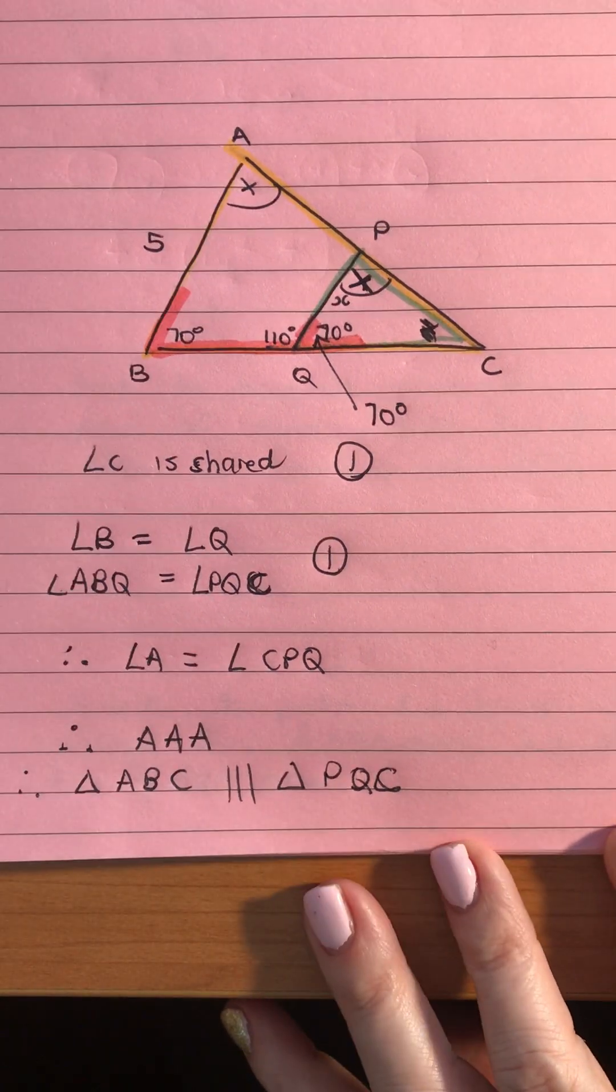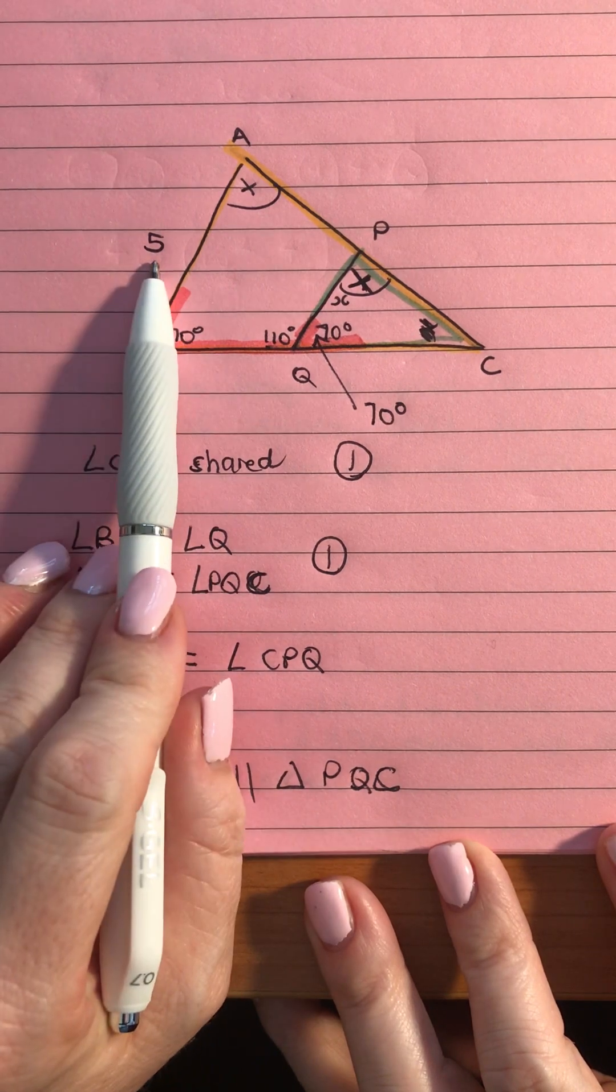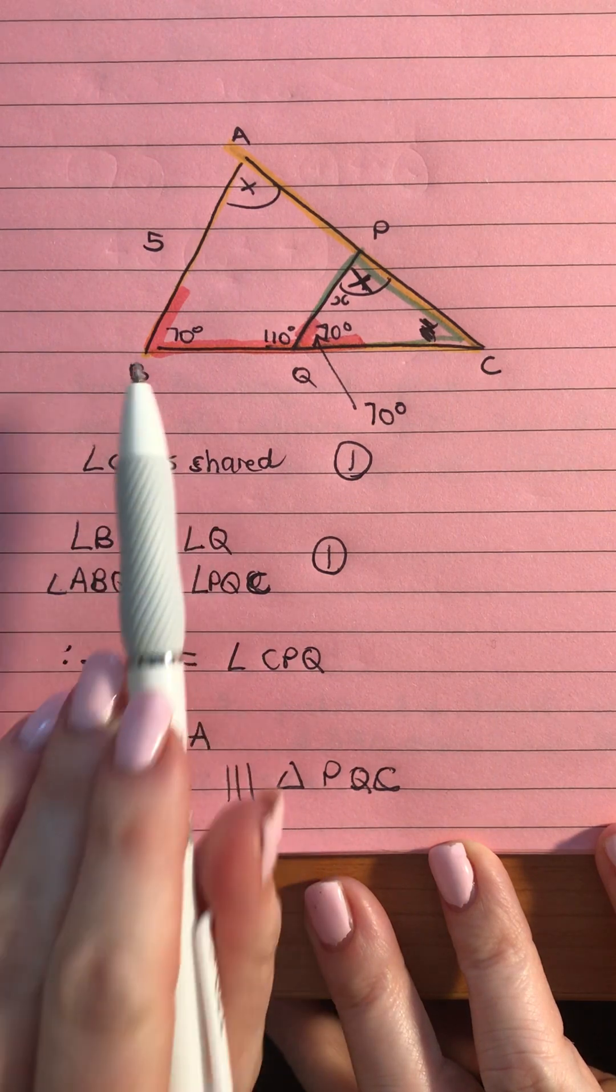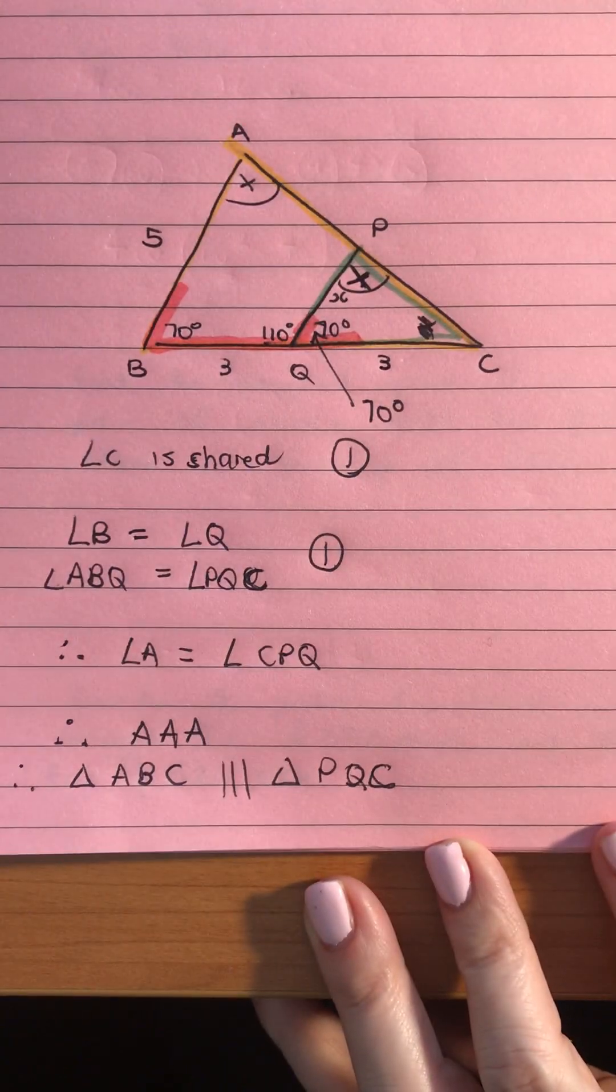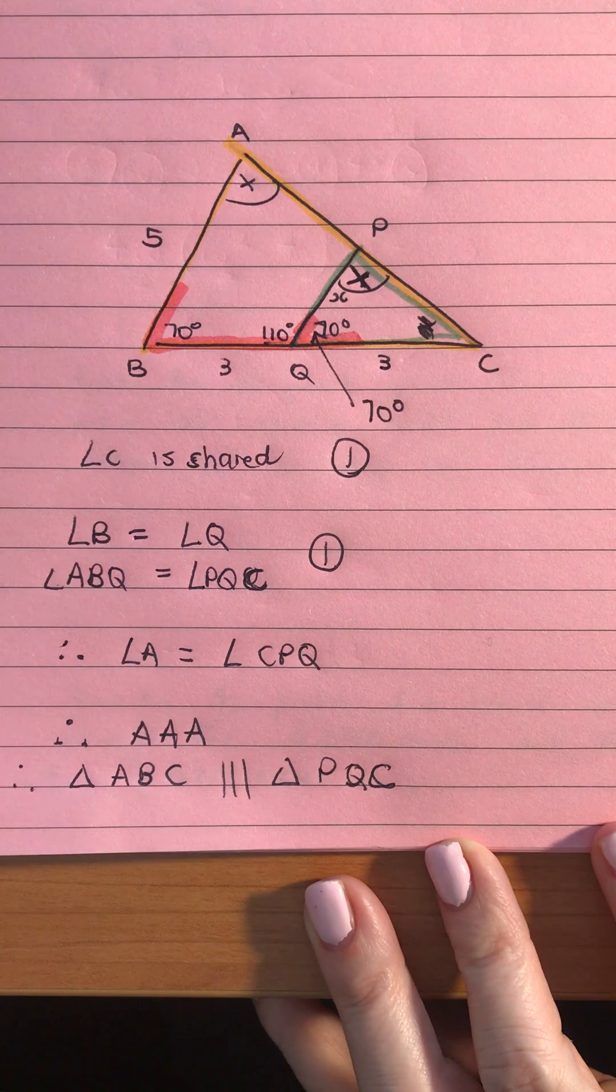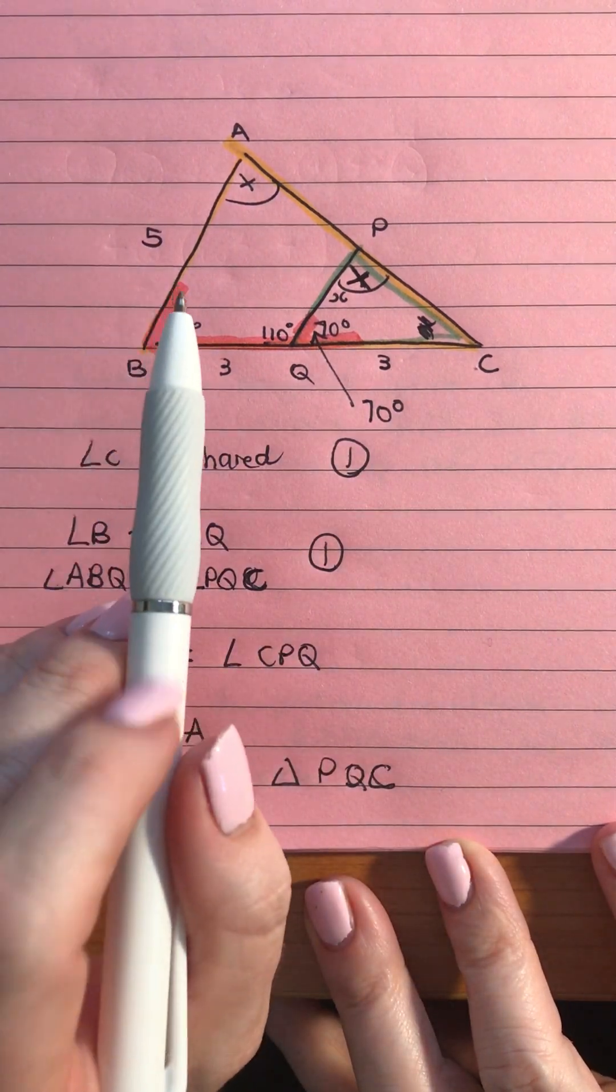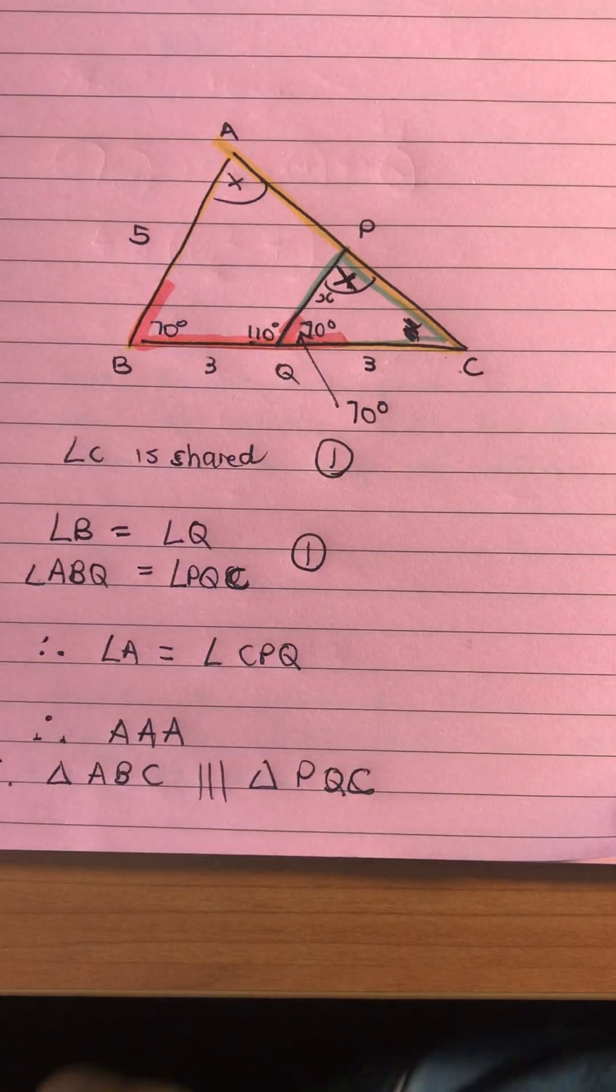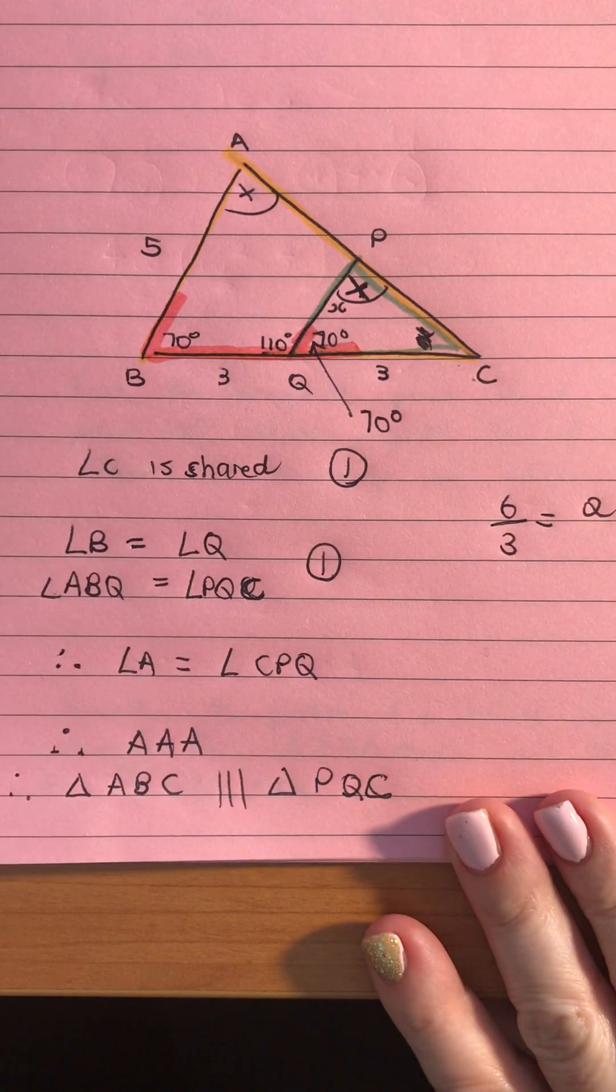Now that we've proven they're similar we can then go and work out what the x value is. Now I think I have missed out some of the other numbers that were on that question so I think there was a 3 and a 3 here so I'm just going to pretend that was what was there. If you're looking at the original question obviously you can go back and work that out. So the total length of the line BC is going to be 6 and we've got the smaller part is 3 so the scale factor between the 6 and the 3 gives us a scale factor of 2.